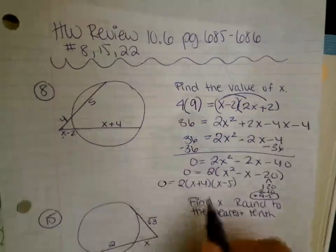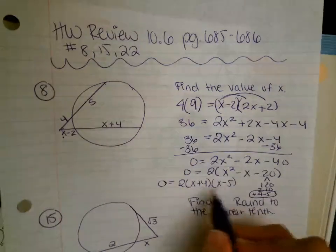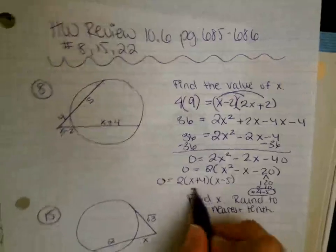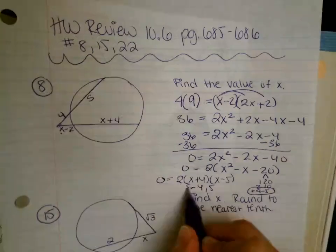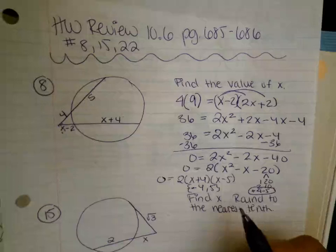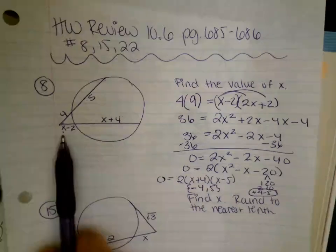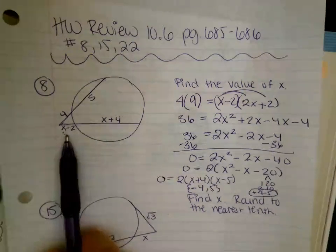So when I set my factors equal to 0 and solve, I get negative 4 and positive 5. So my solutions are negative 4 and positive 5. If I had negative 4 and I plugged it back in, negative 4 minus 2 is negative 6.